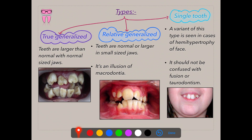Single tooth macrodontia is most commonly seen in hemihypertrophy of the face, a rare disorder. Hemi means half and hypertrophy means enlarged, so hemihypertrophy means half of the facial tissues are enlarged. In such conditions, one or two teeth on the affected side appear enlarged — hence single tooth or localized macrodontia. As seen in the picture, the two centrals are excessively enlarged compared to other teeth. This should never be confused with fusion or taurodontism.